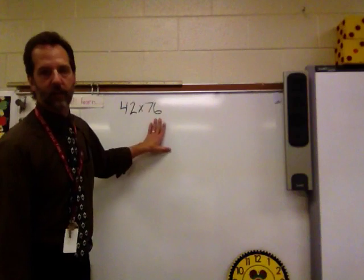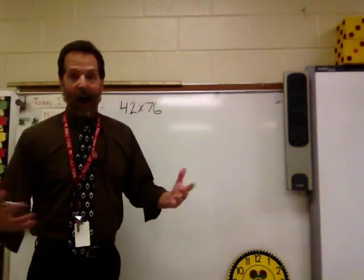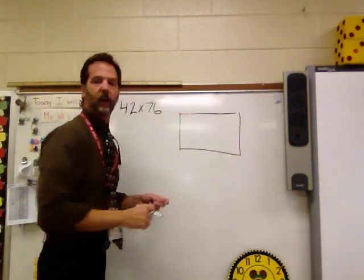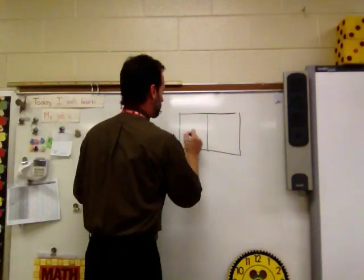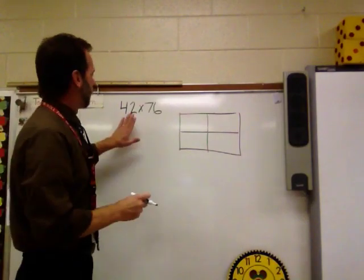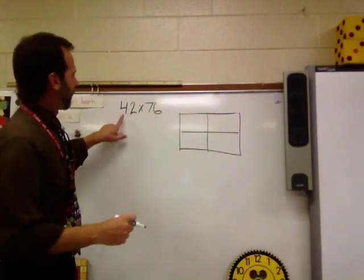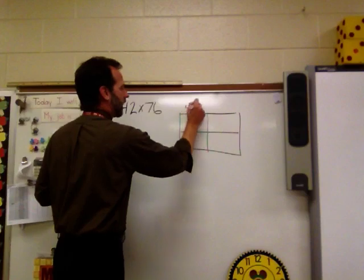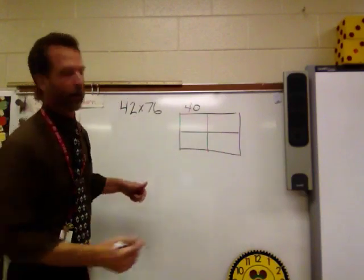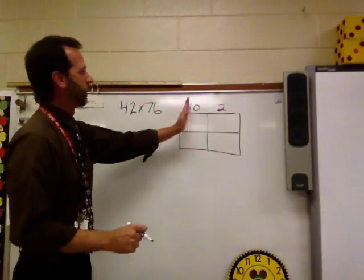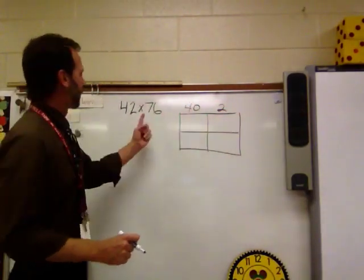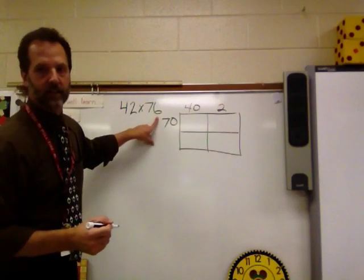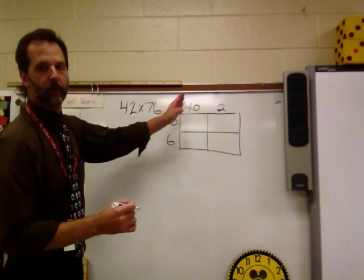The first problem we have is 42 times 76. What we're going to do in the box method is make a box. It's going to be a rectangle that we're going to divide into four quadrants. Now around the box, we're going to put the values of the numbers that we have. For example, this 4 doesn't really have a value of 4, has a value of 40. So we're going to put that above the first box. This 2 has a value of 2. We'll put that above the second box. So we have 42. Now on this side, we'll put the value here. This value of the 7 is 70. The value of the 6 is 6. So we have 76 and 42.